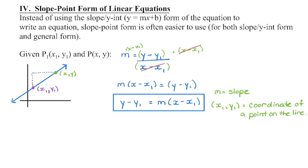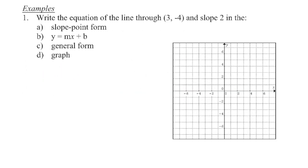I need to keep my brackets on this side because I'm going to distribute my slope in. Because there was a 1 outside the bracket on the other side, I don't need brackets there.